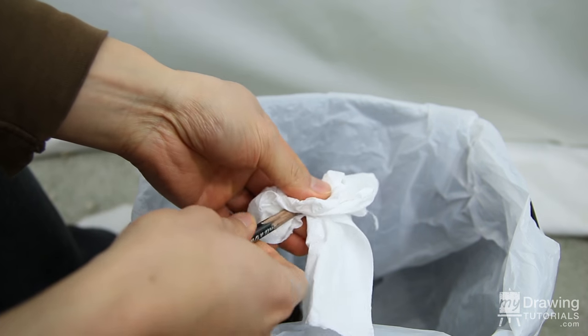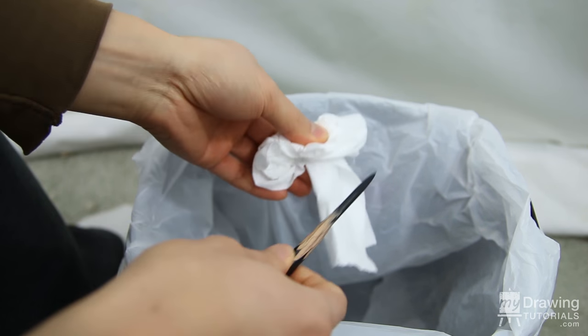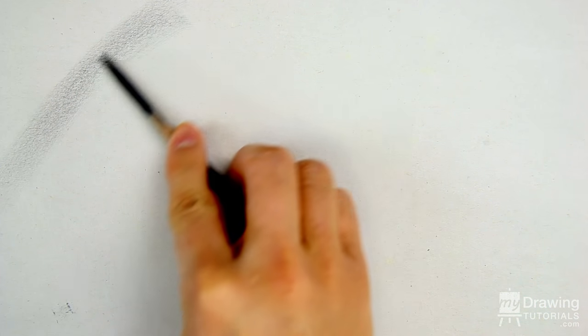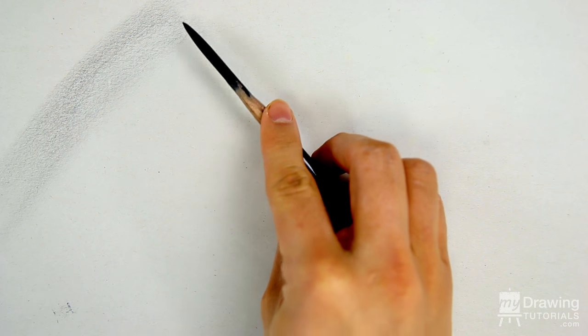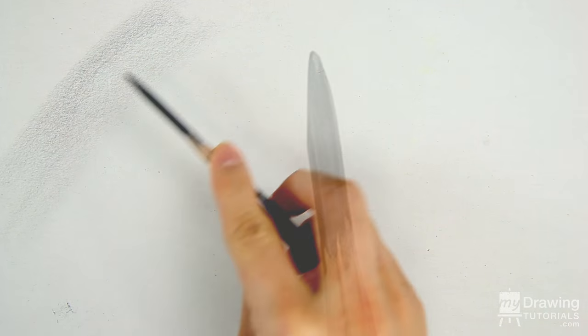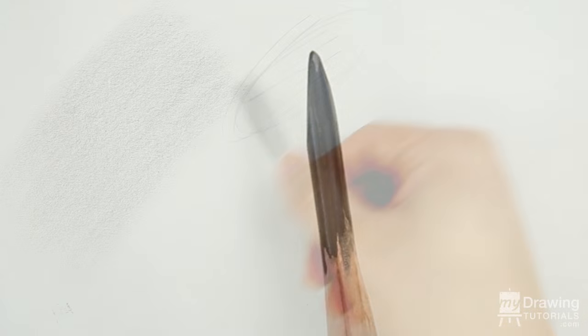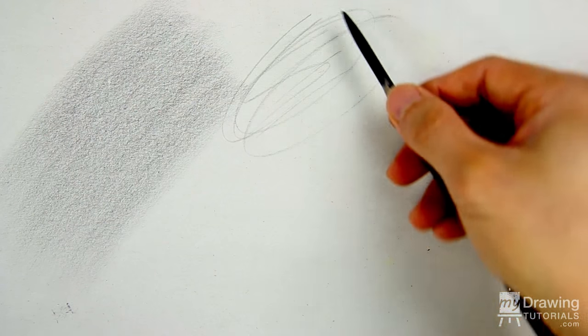Then wipe off the excess powder and the pencil is ready for drawing. If you're going to use the side of the pencil for a lot of shading, remember to rotate it frequently so you can maintain the smooth contour of the lead. If you keep using just one side, the pencil will develop a bevel and you'll have to resharpen it again.